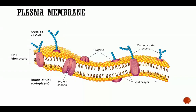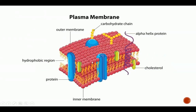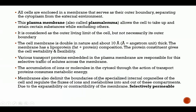The cell membrane is double in nature. As shown in the picture, it has a double layer — an upper part and a lower part. It is about 10 Angstrom units thick. The membrane has a lipoprotein composition, meaning a combination of lipid and protein. The protein constituent gives the cell wettability and flexibility.